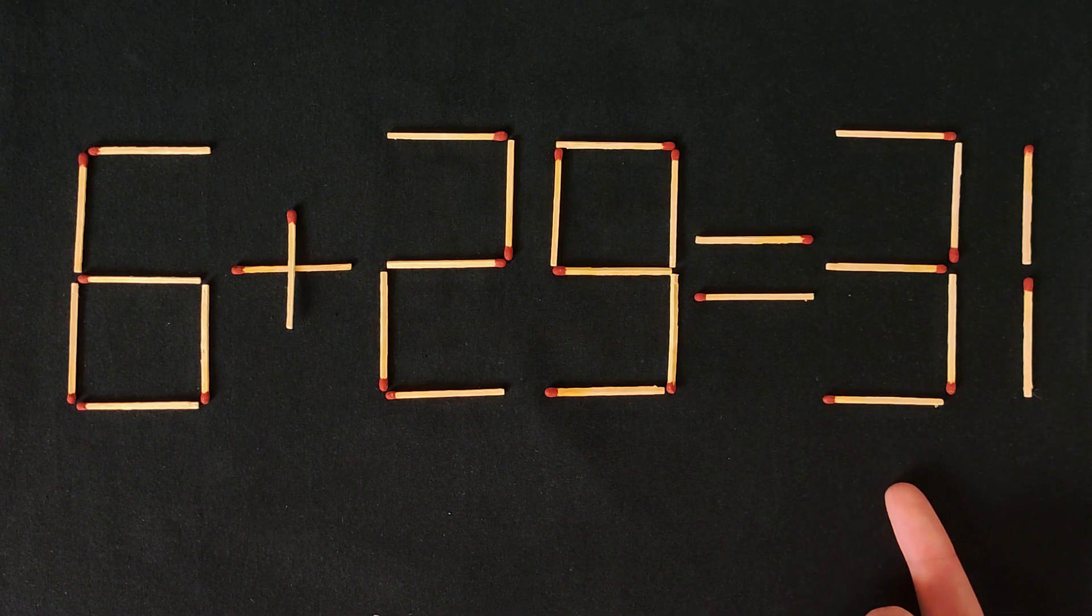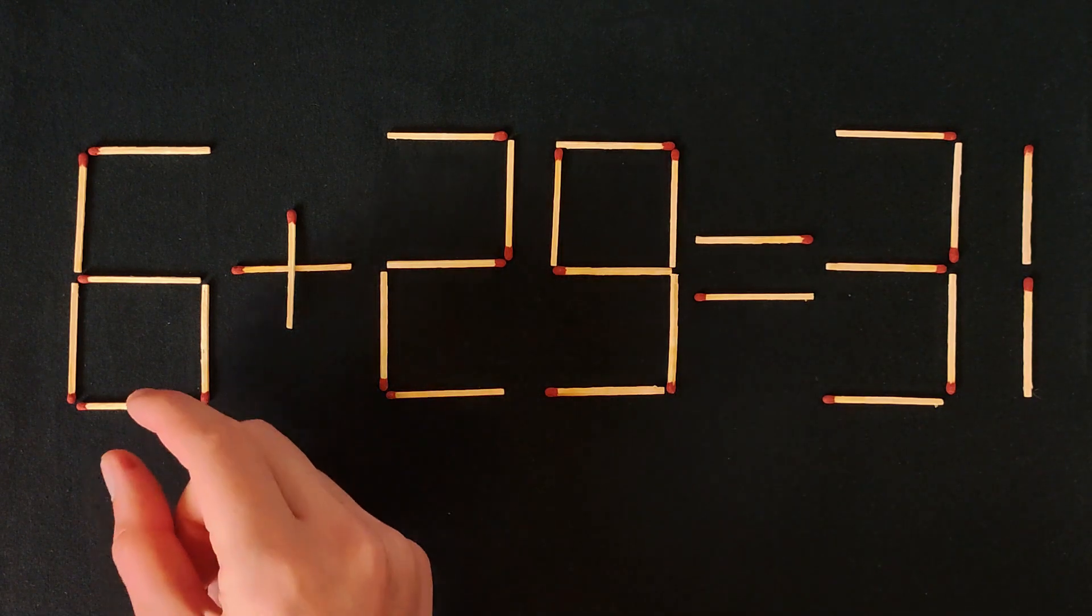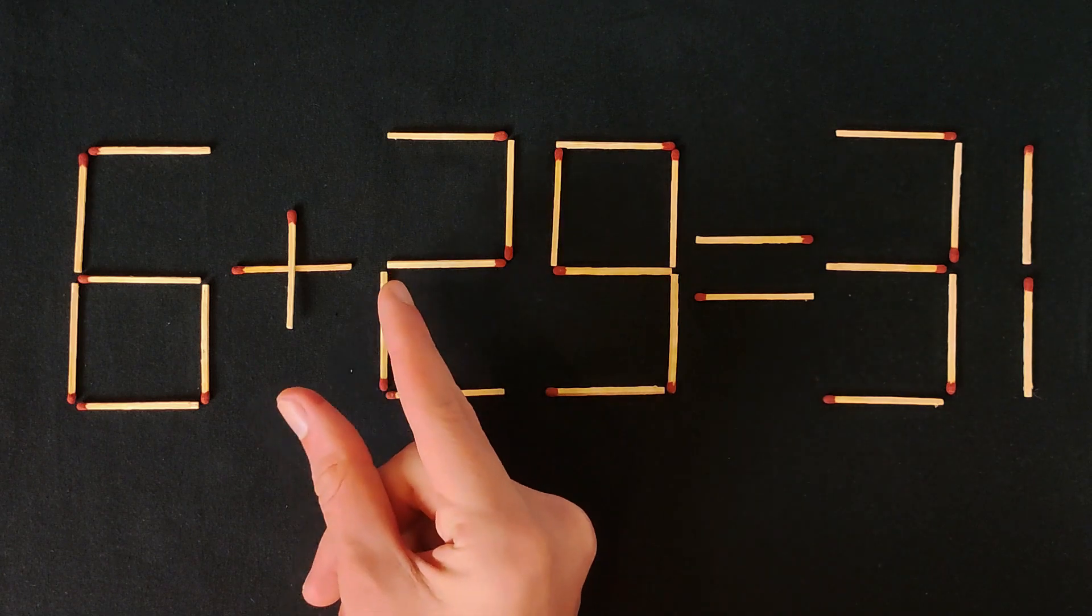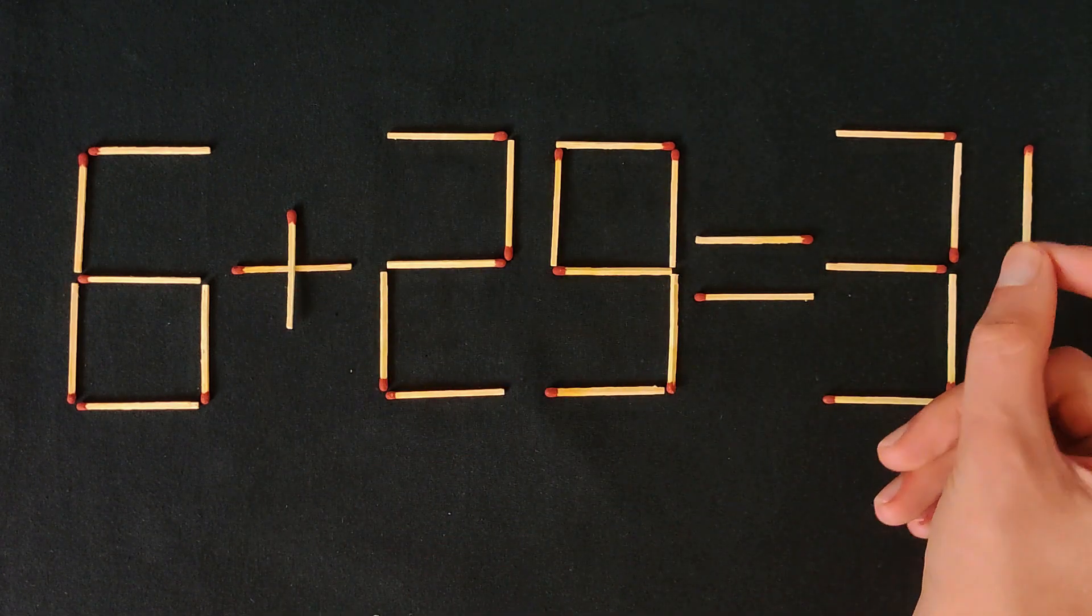6 plus 29 equals 31. That's wrong. We need to rearrange only two matches so that this equation is correct.